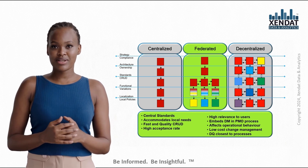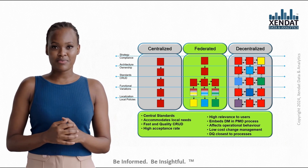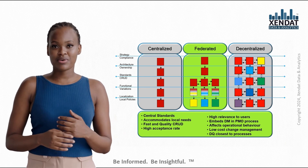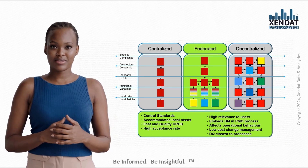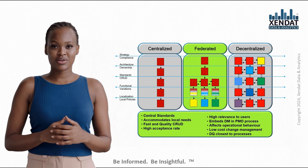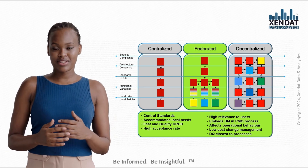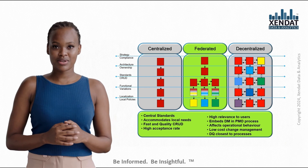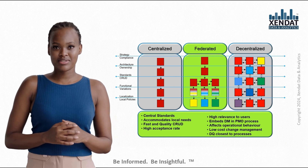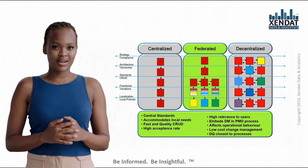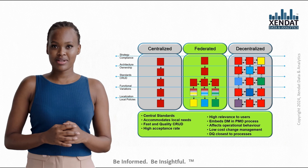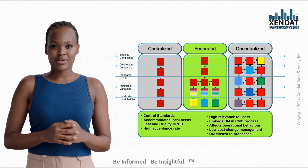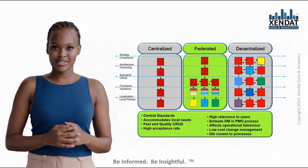Finally, we have the Federated Data Governance Model — a hybrid approach that combines the strengths of both centralized and decentralized governance. The goal is to create a balance between standardization and flexibility. In a federated model, certain core standards — such as data policies, architecture, and strategy — are defined centrally, but the implementation is spread out across different business units, allowing them to adapt these standards to their specific needs.